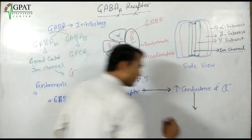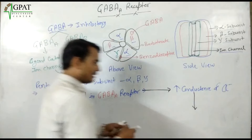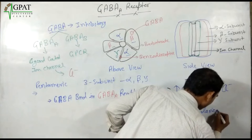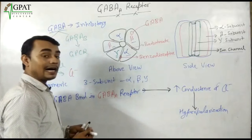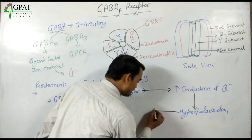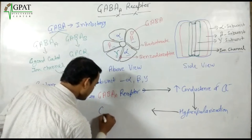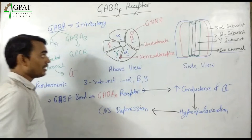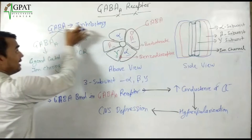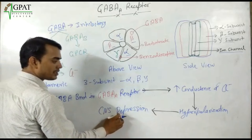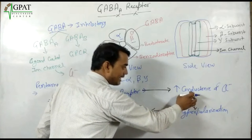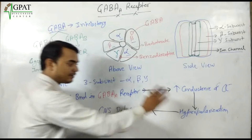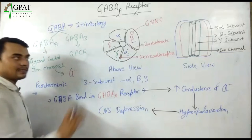As the conductance of chloride increases from outside to inside, this leads to hyperpolarization. After hyperpolarization, CNS depression occurs. This explains the inhibitory nature of GABA — the inhibitory nature is due to CNS depression caused by hyperpolarization, which itself results from increased chloride conductance.